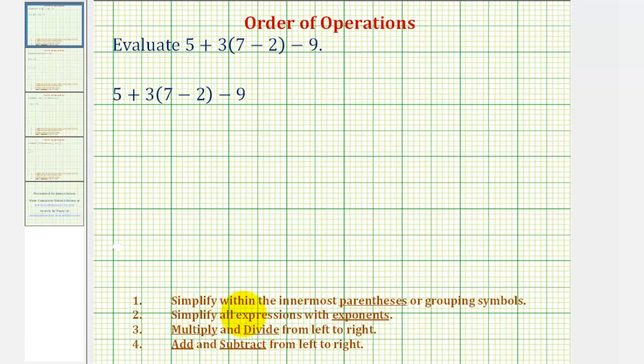So for the first step, we want to simplify within the innermost parentheses or grouping symbols. Looking at our expression, we want to simplify 7 minus 2 in the parentheses first. Since 7 minus 2 is equal to 5, for the first step this simplifies to 5 plus 3 times 5 minus 9.